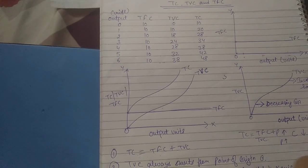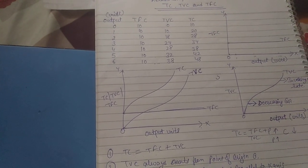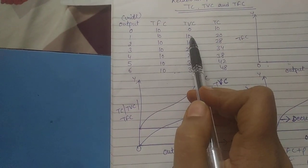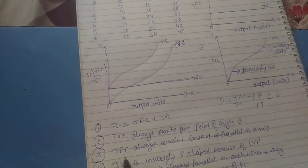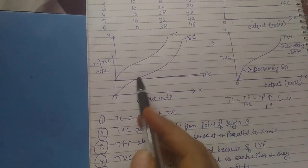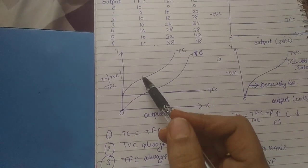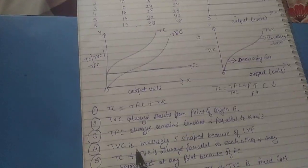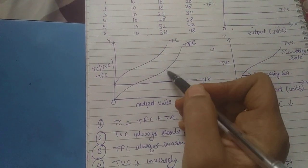TVC starts from the origin because when output is zero, as you can see in the schedule, total variable cost is also zero. Next, TFC always remains constant and parallel to the x-axis, because it does not change with the change in the level of output. The next point is that TVC is inverse S-shaped, because of the law of variable proportions.